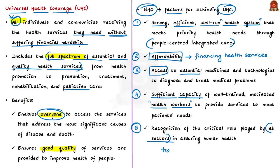Finally, universal health coverage requires a recognition of the critical role played by all sectors in assuring human health. These sectors include transportation, education, and proper planning in urban areas. All these sectors play a critical role in assuring human health. So if a country has all these factors, then it has achieved universal health coverage.